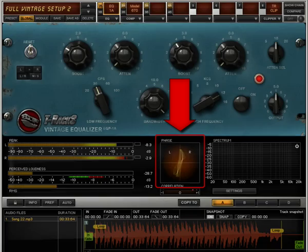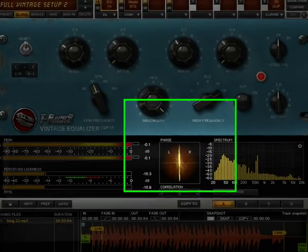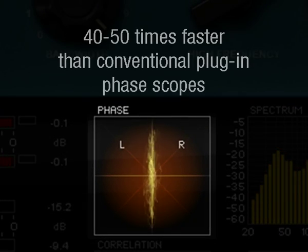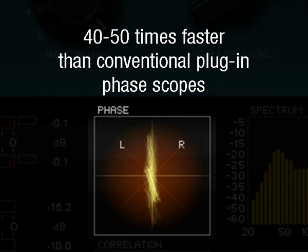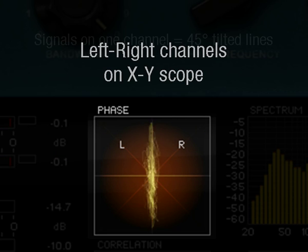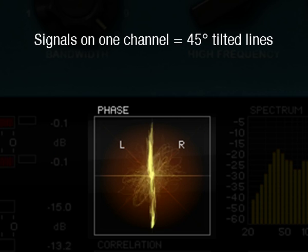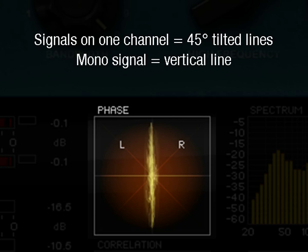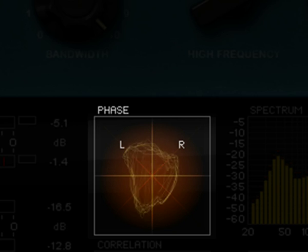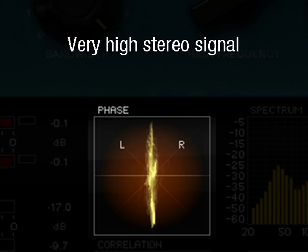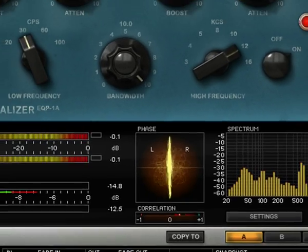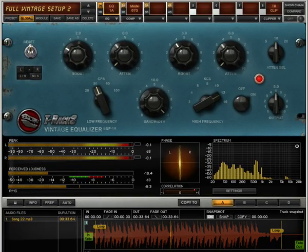The phase scope included in T-RAX 3 behaves very closely to those you usually find on high-end metering devices or on consoles. It reacts 40 to 50 times faster than conventional plug-in phase scopes, giving far more useful information. Left-right channel samples are shown on an XY scope so that signals present on a channel are only displayed as 45-degree tilted lines. A mono signal is displayed as a vertical straight line, and a completely out-of-phase signal as a horizontal line. When the stereo master is pushed very high, you'll notice a transformation of the displayed phase to a square with sharp edges.